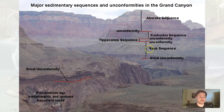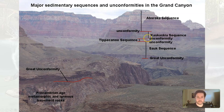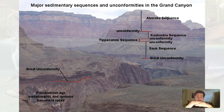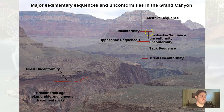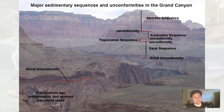Initially we looked at the Sauk sequence and what was deposited, and now we have the sequence of rocks deposited in the Tippecanoe. Remember, in between these we have unconformities because once sea levels dropped, whatever was exposed experienced weathering, erosion, or just non-deposition — nothing was being deposited. Once the seas came in again and deposited new material, there's a gap in time. So: Sauk, unconformity, Tippecanoe, unconformity, Kaskaskia, unconformity, Absaroka, and so on.